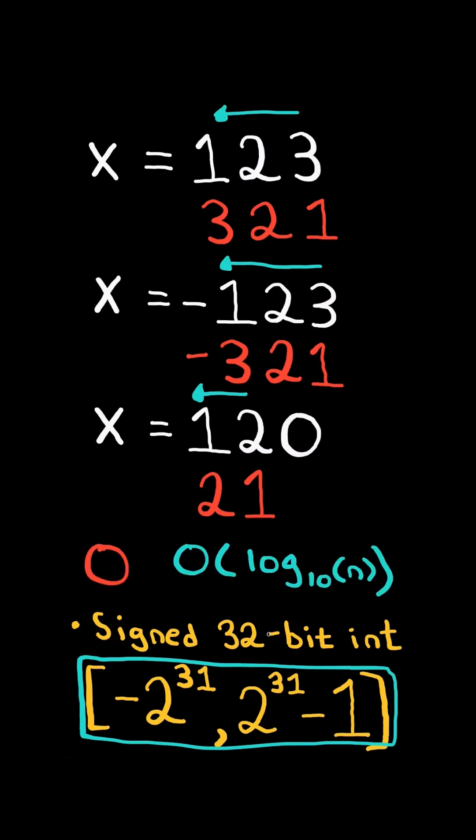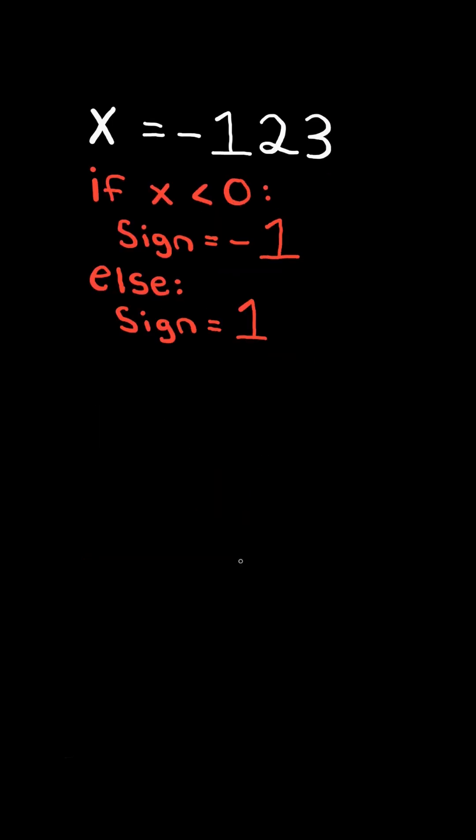We will solve this in O of the number of digits time. First, we will keep track of the sign of the integer, and then convert x to its absolute value. We will then construct the reverse number.